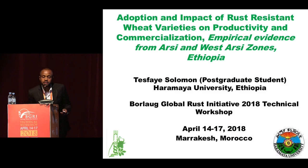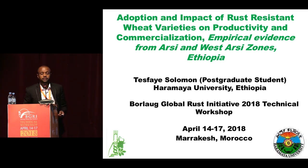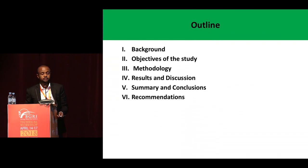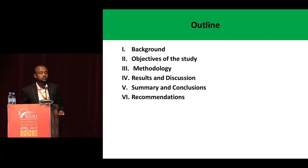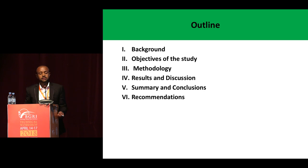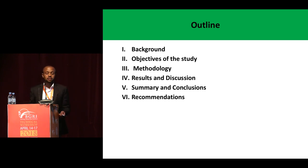The title of my presentation is 'Adoption and Impact of Resistant Wheat Varieties on Productivity and Commercialization: Empirical Evidence from RDC and West RDC Zones.' In this presentation, I'll follow this outline: first, a few things about wheat production as background; then the objective of the study; then methodology; then results and discussion; summary and conclusion; and finally, the recommendation.